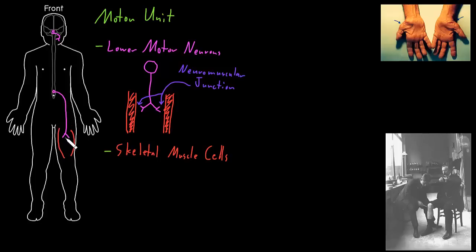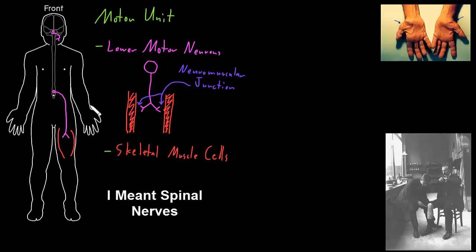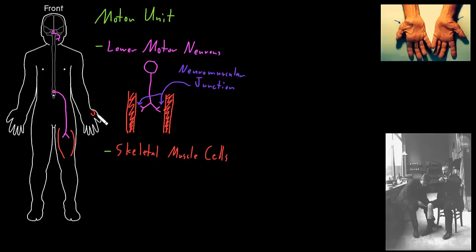The axons continue through branches of nerves in the peripheral nervous system until they reach and synapse on all the skeletal muscle cells in their motor unit. The lower motor neurons in the cranial nerves primarily control the skeletal muscles of the head and neck, while those in the spinal cord primarily control skeletal muscle in the limbs and trunk. Small muscles that need rapid precise control, like those that move the eyes or fingers, tend to have small motor units — a lower motor neuron synapsing on just a small number of skeletal muscle cells.